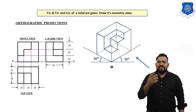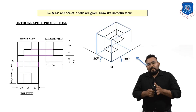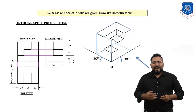This is how you draw an isometric view or isometric drawing from a given 2D drawing. The key here is practice — practice again and again and you will become a master at isometric projection and isometric view. I hope you liked this video. Have a nice day, bye bye.